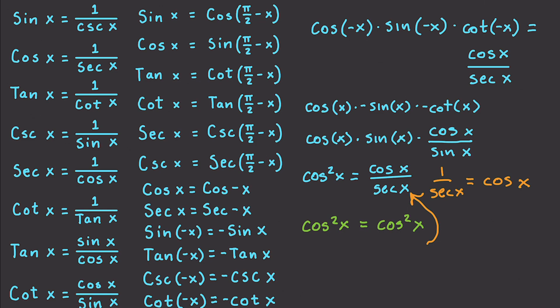That's a rundown of many trigonometry identities, and more are coming up — we're going to get more and more advanced. As you can see, trigonometry is starting to look more like algebra instead of geometry. Please leave your questions and comments down below, and until next time.